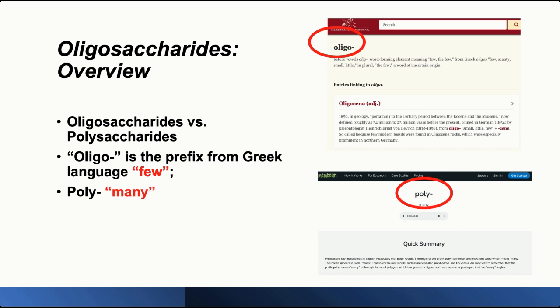So what are oligosaccharides? In the carbohydrates world there are two terms that are quite similar: oligosaccharides and polysaccharides. Looking at the names, only the prefix is different. For oligosaccharides, 'oligo' is a prefix from Greek meaning 'few.' For polysaccharides, 'poly' in Greek means 'many.' So the name already differentiates oligosaccharides from polysaccharides.